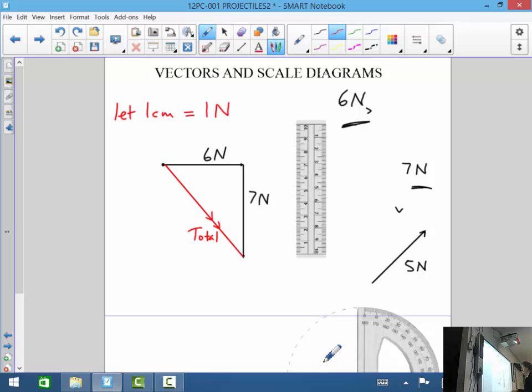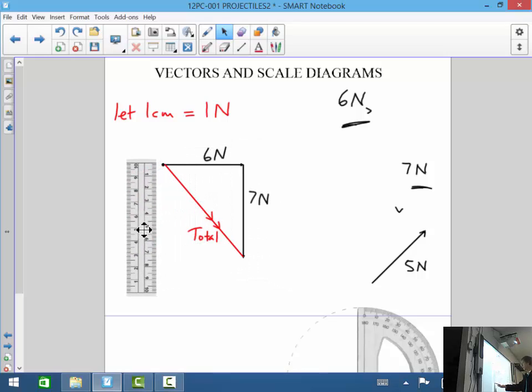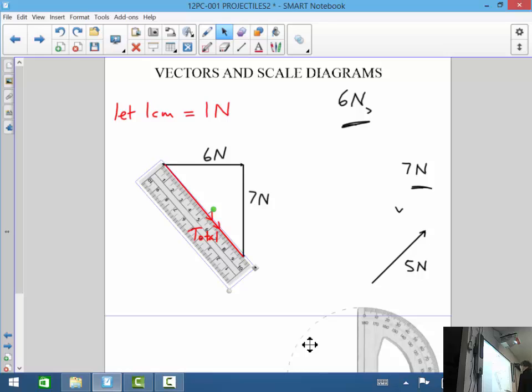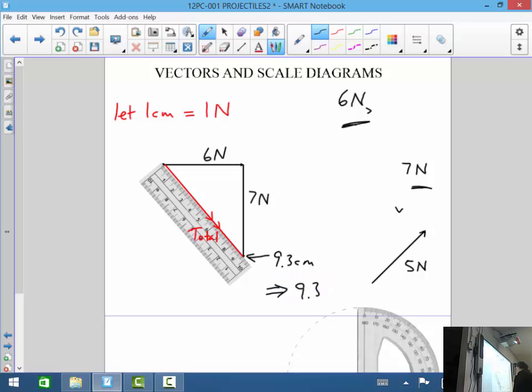To get the result here, we can grab the ruler and measure that length from the start. Looking at that, we're measuring this to be around 9.3 centimeters roughly. So that would imply, on the scale, it's 9.3 Newtons.